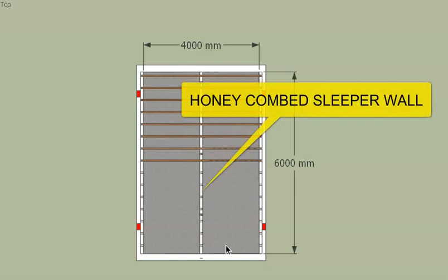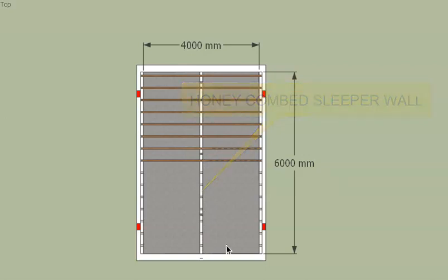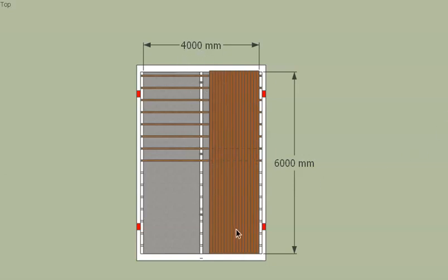There are load-bearing walls on the sides and in the center there is a half-brick thick wall. The floor joists rest on these three walls, and on top of the floor joists you have the floor boards. The floor boards come at right angles to the floor joists.